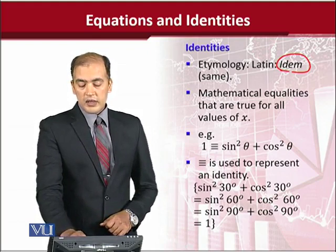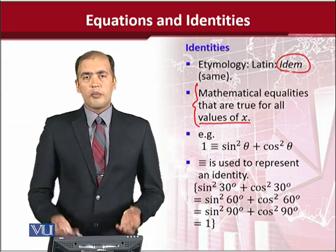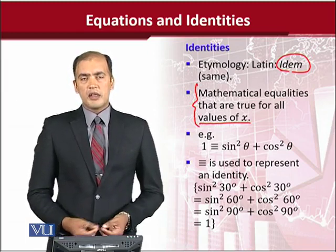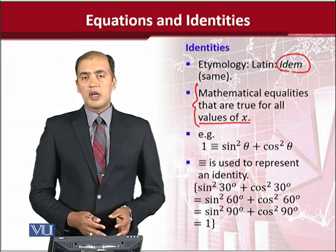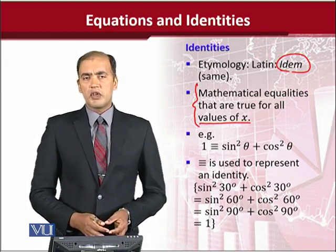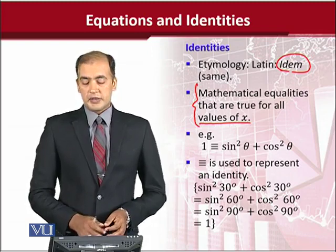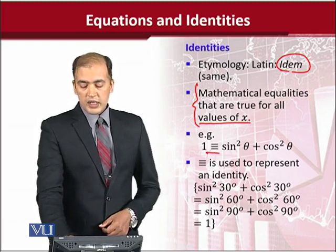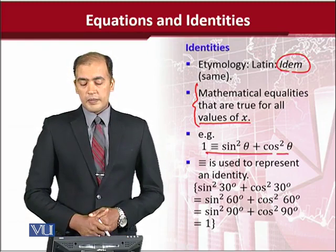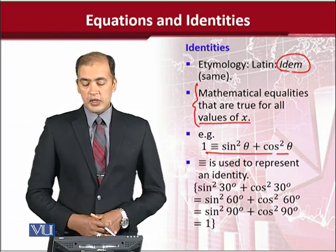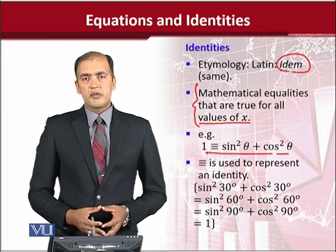Identities are mathematical equalities that are true for all values of x. These are a kind of equations that are established for all values of x. We take this example from trigonometry — this trigonometric identity actually allows us to empirically test it.